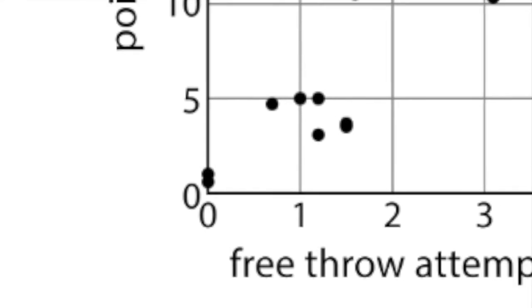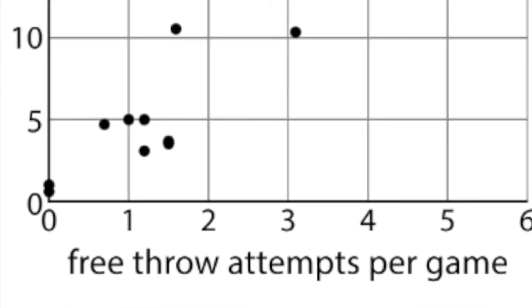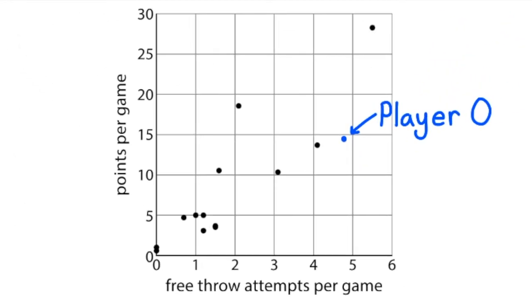I can move to the right 4.8 units to represent the free throw attempts per game, and then I can move up vertically 14.3 units to represent the points per game. The point for Player O would be located right here.